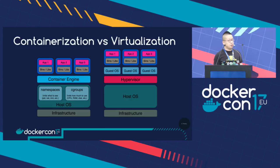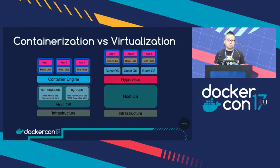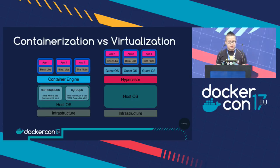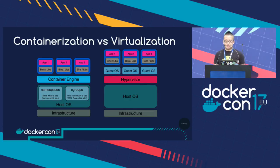I would like to compare containerization versus virtualization. I guess most of you here are already experts in Docker. So I just want to emphasize the major difference between them. Docker on the left-hand side shares resources amongst different containers, so it's pretty lightweight. On the right-hand side, virtualization does well at isolating resources, but it has the hypervisor overhead, which is not that lightweight.